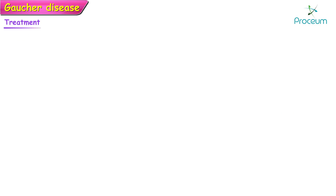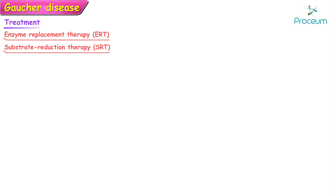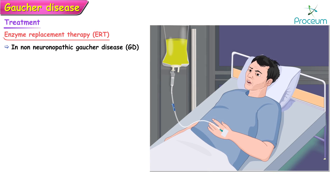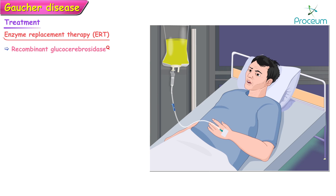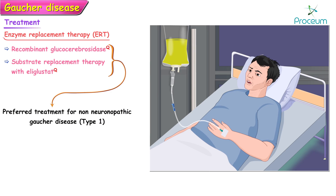Treatment options for Gaucher's disease include enzyme replacement therapy, substrate reduction therapy, and other modalities. The decision to offer Gaucher-specific therapy in patients with non-neuronopathic Gaucher's disease is based upon disease severity and determined by initial assessment or significant disease progression demonstrated through regular follow-ups. Enzyme replacement therapy with recombinant glucocerebrosidase, or substrate reduction therapy with eliglustat, are the preferred treatments for patients with clinically significant manifestations of non-neuronopathic Gaucher's disease.